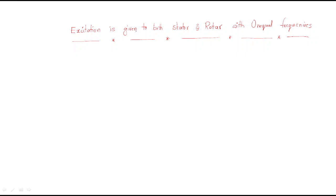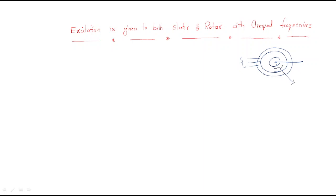In this session, we discuss a different topic: excitation given to both stator and rotor with unequal frequencies. Up to now, we discussed giving supply only to the stator to get mechanical output. Now we consider giving supply to both stator and rotor simultaneously, where stator frequency and rotor frequency are different.